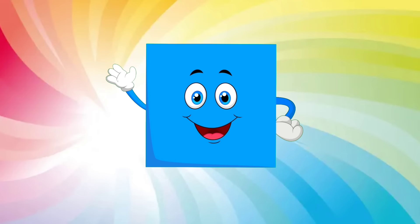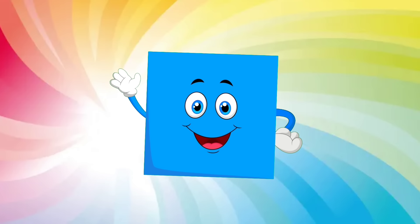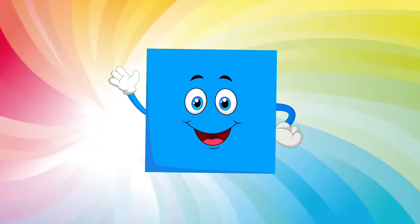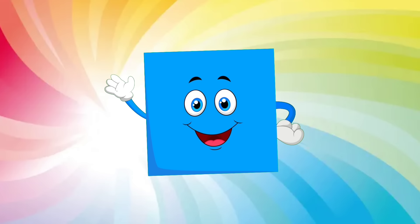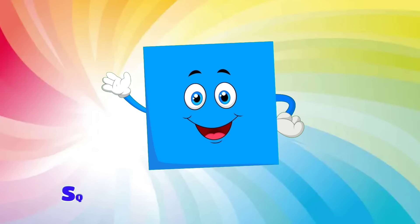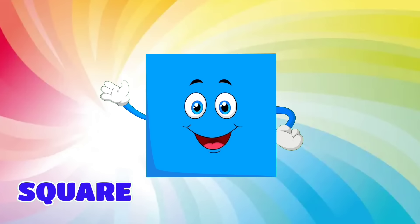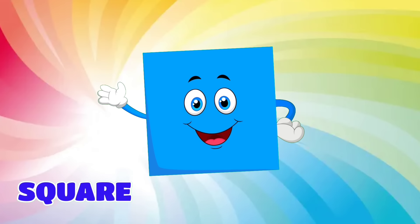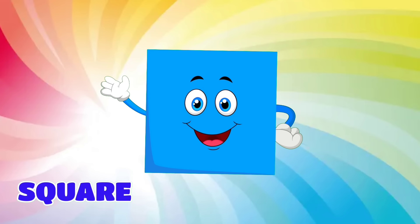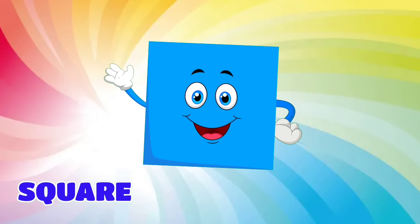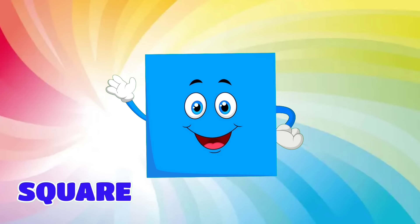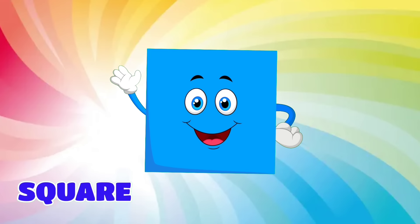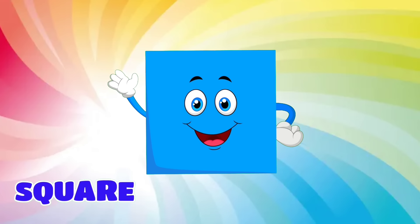I'm a four-sided square, shaped like a box. I'm a four-sided square, shaped like a box, shaped like a box. I'm a four-sided square, and all four sides are the same.